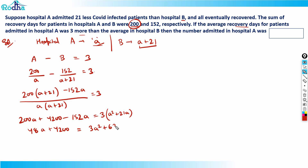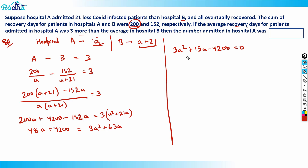Rearranging: 3A² plus 15A minus 4200 equals 0. Dividing through by 3 gives A² plus 5A minus 1400 equals 0. Now I need to factor 1400 into two numbers with a difference of 5. Since 14 × 100 = 1400 and 17 × 20 isn't quite right, let's move closer.